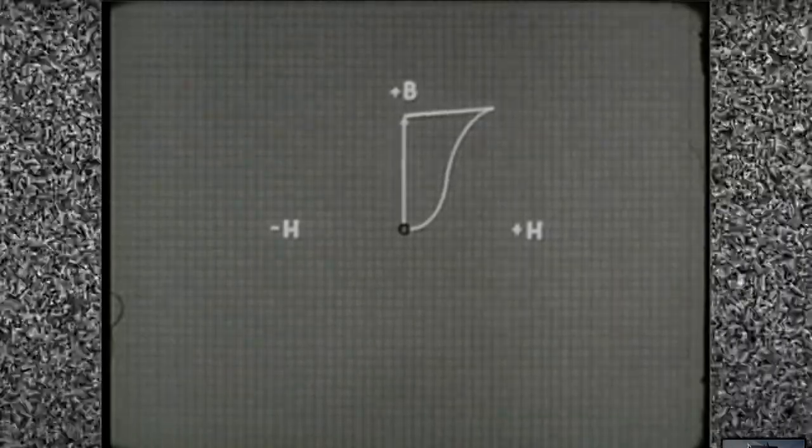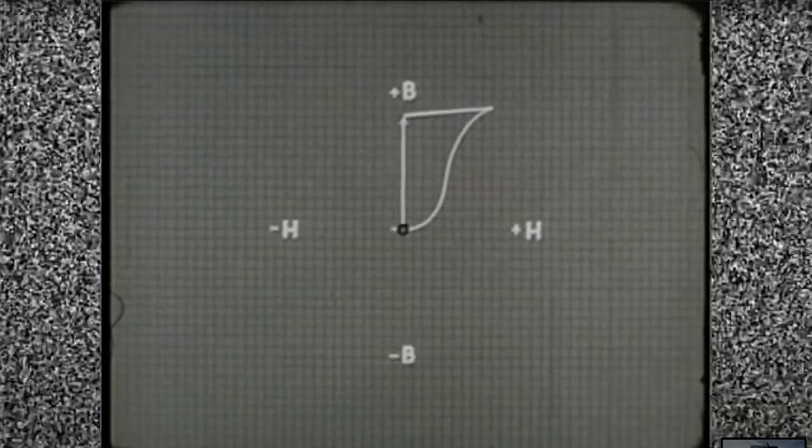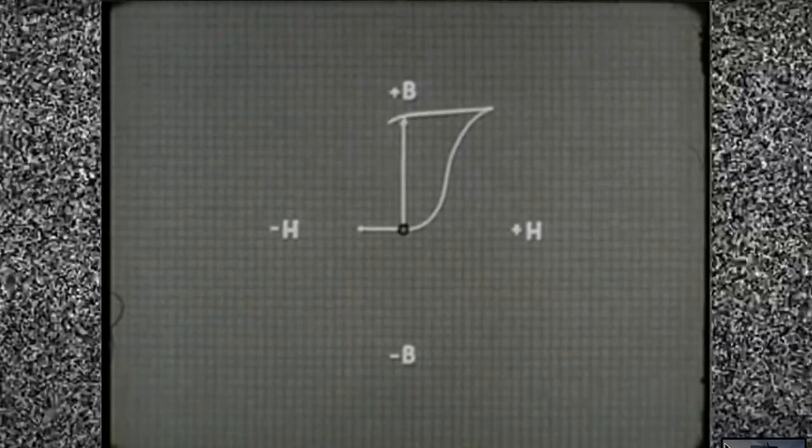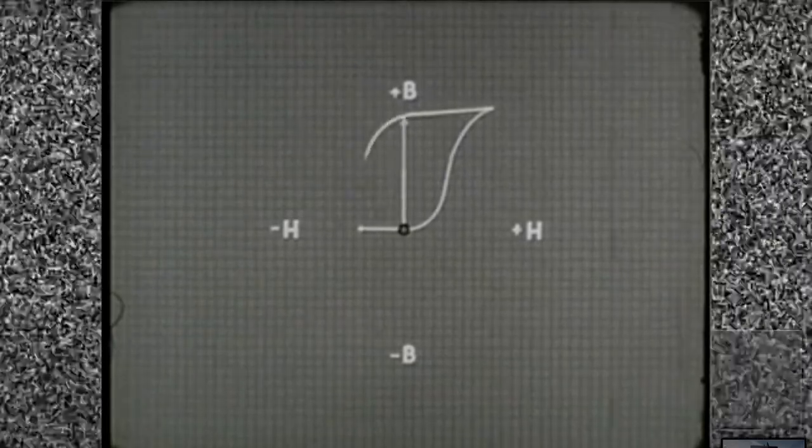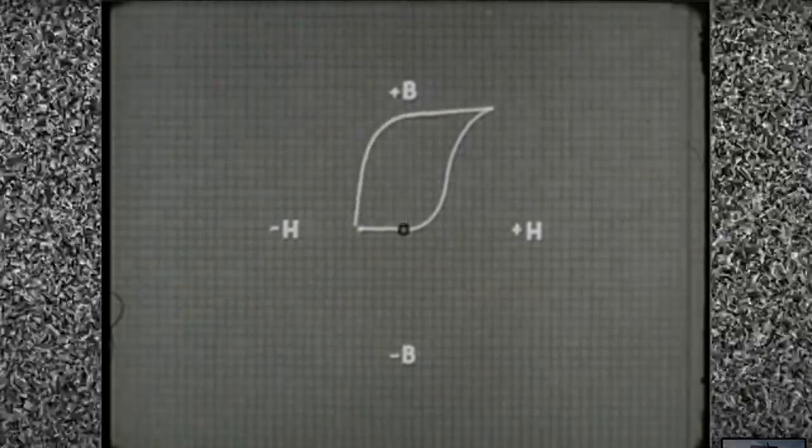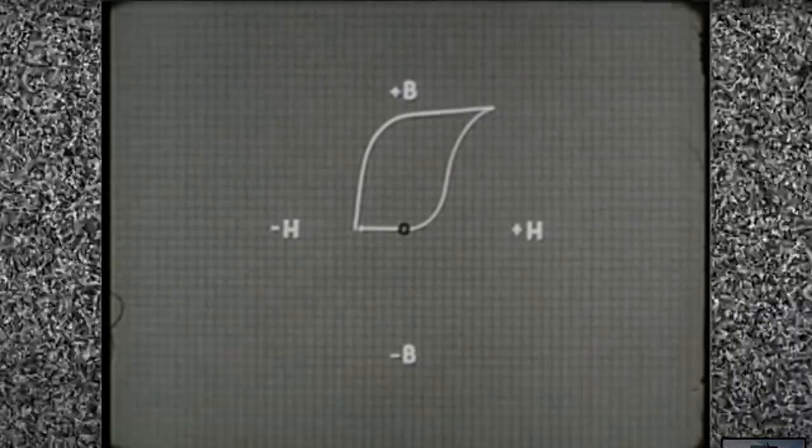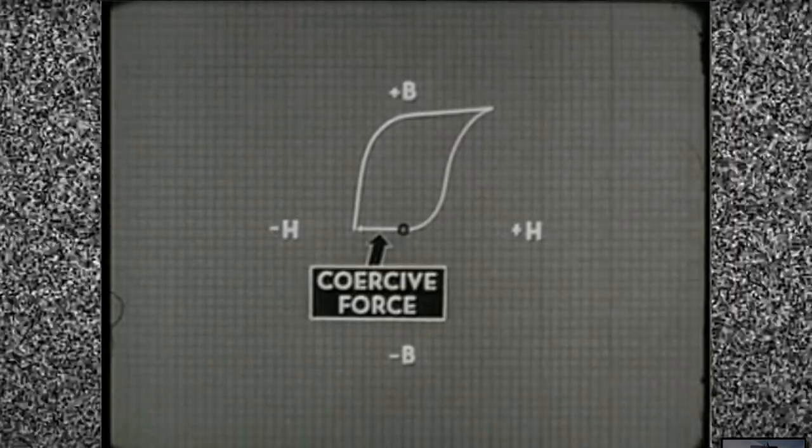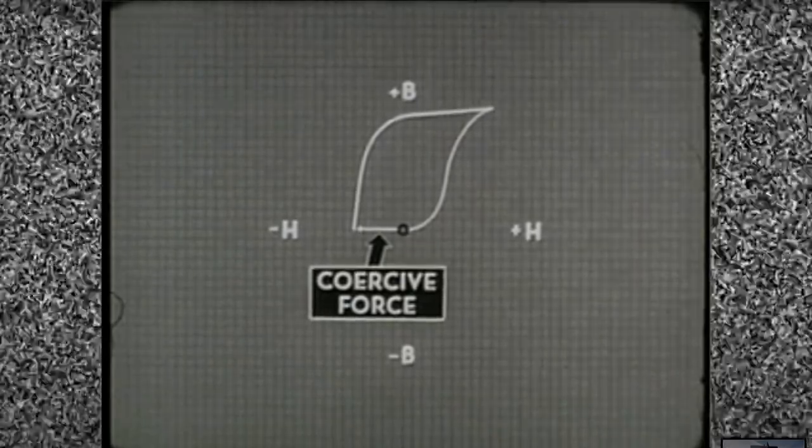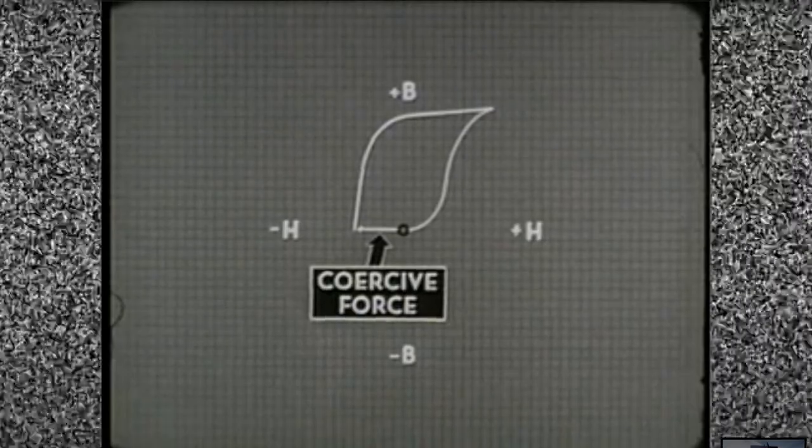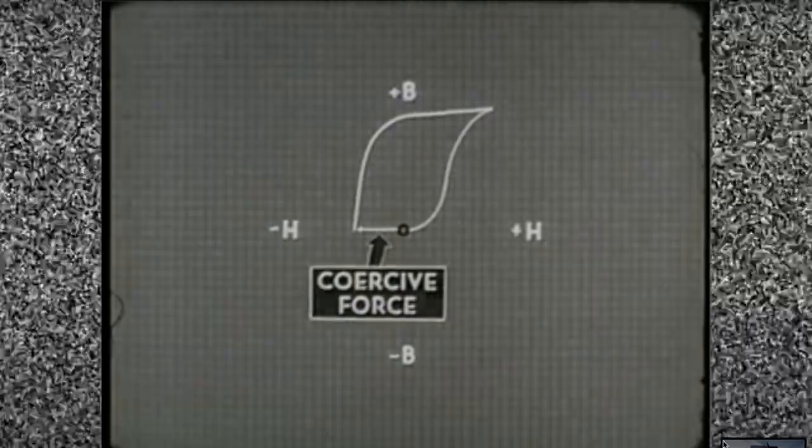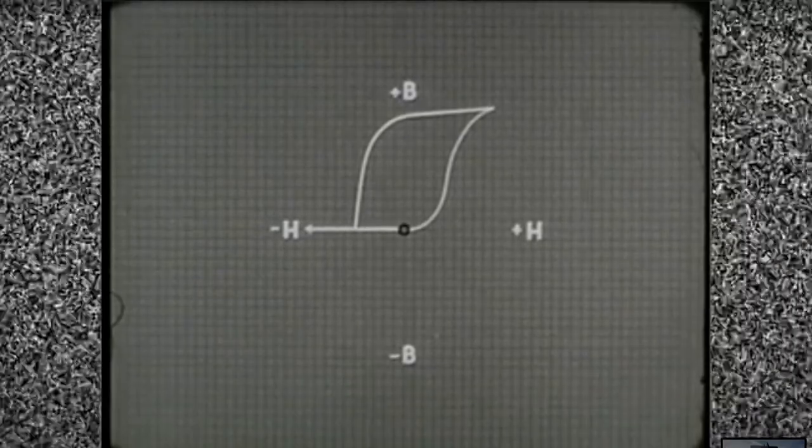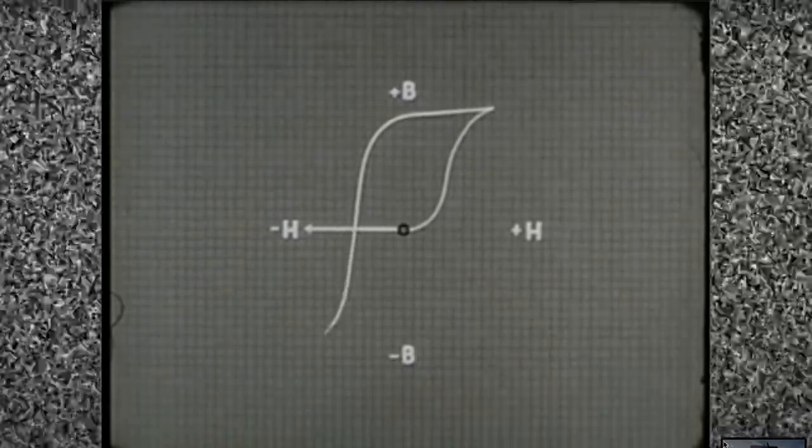Negative flux density is symbolized by minus B. We need a certain amount of negative magnetizing force to overcome the existing positive residual magnetism in the core. The amount needed is called the coercive force. At this point, the material contains no magnetism. The flux density is zero.